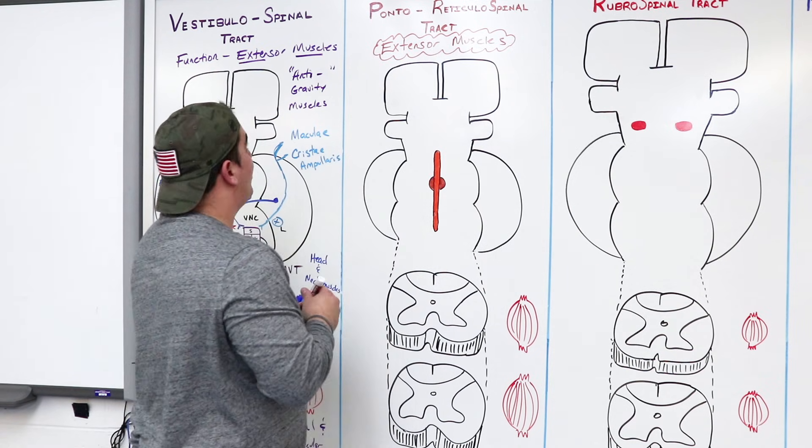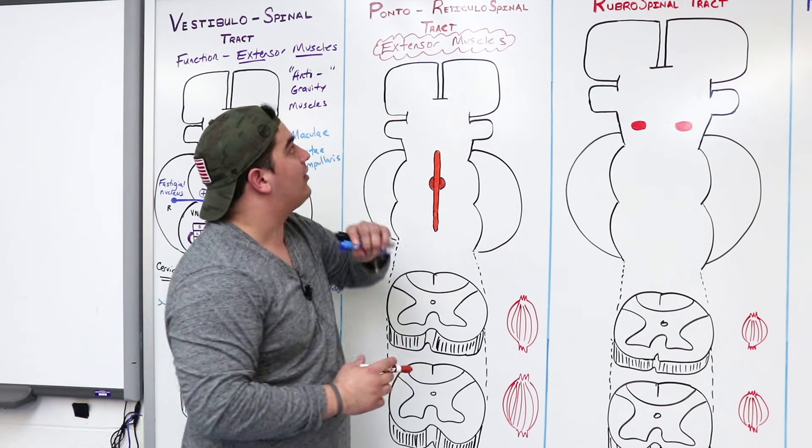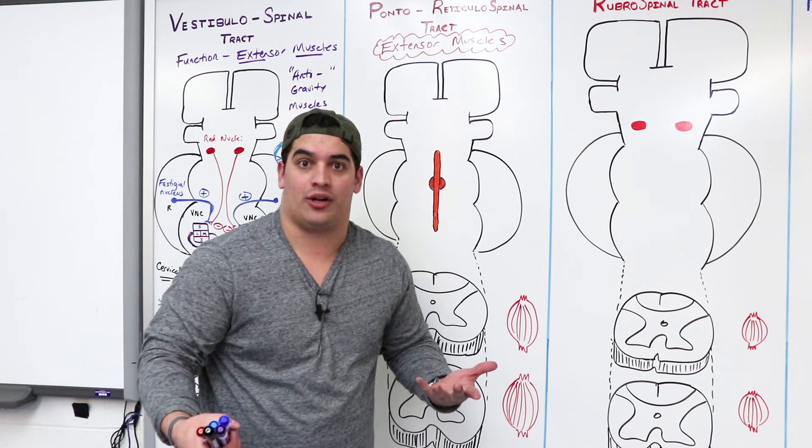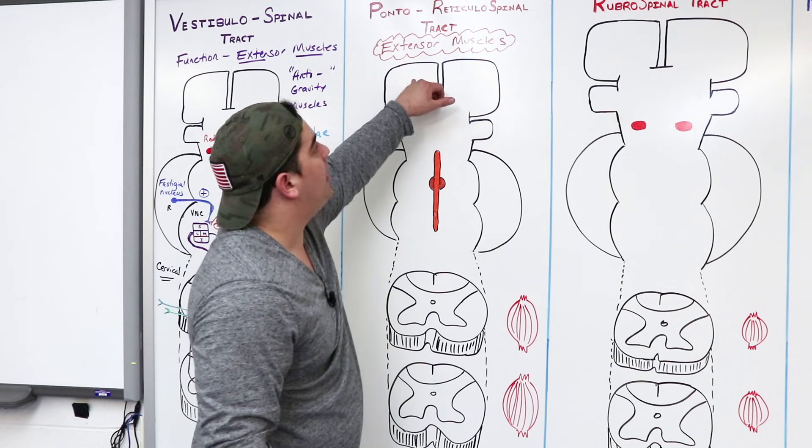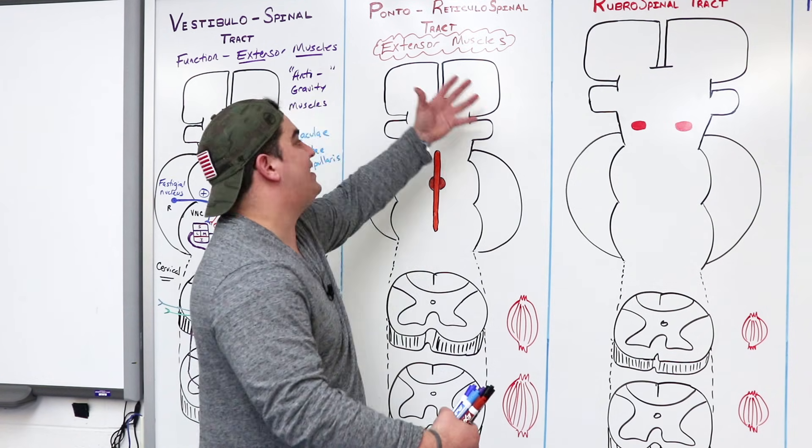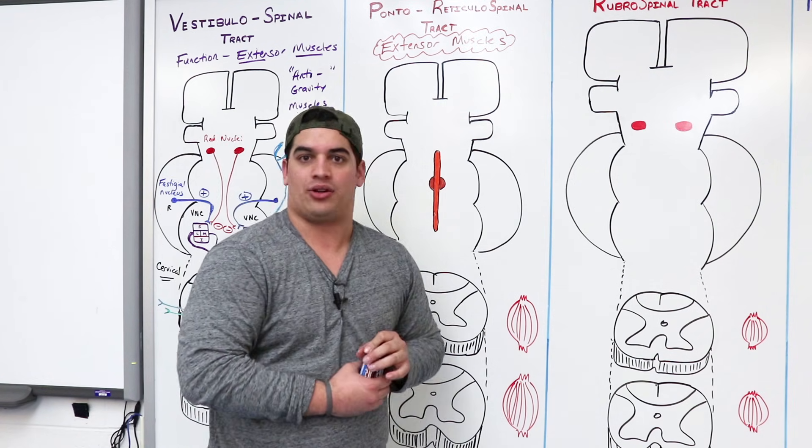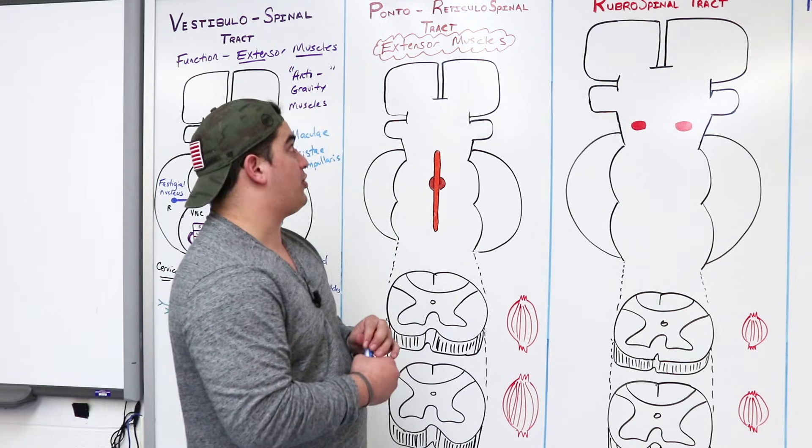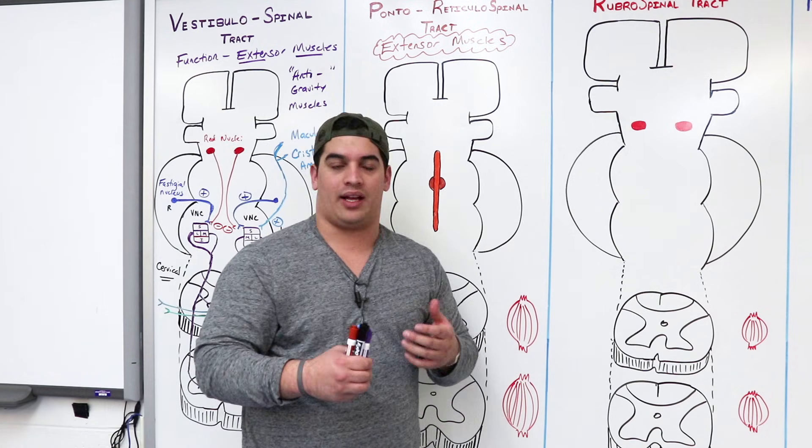If you can remember, Vestibulospinal and Ponto-Reticulospinal, they perform the same function. The Ponto-Reticulospinal is more of an assister though. It's helping, it's assisting the lateral Vestibulospinal tract and medial Vestibulospinal tract in these extension muscles, the extensor muscles.